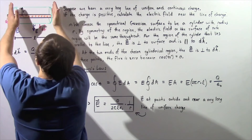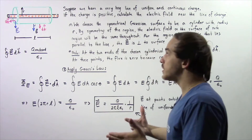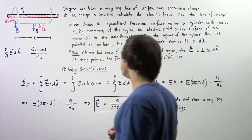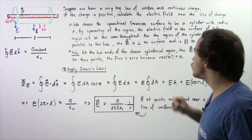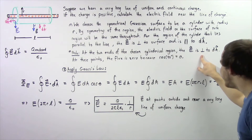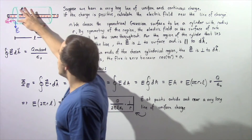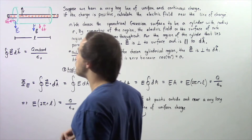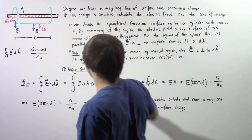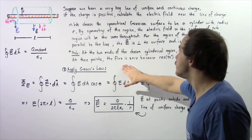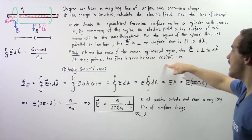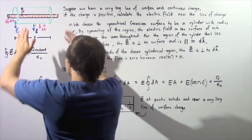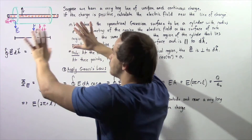Now let's examine what happens at the two ends of our cylinder. Since we're choosing a closed region of space, we have to consider these two sides as well. At the two ends of our chosen cylindrical region, the electric field is perpendicular to dA. So the angle is 90 degrees, and the electric flux is zero because cosine of 90 is zero. There is no electric flux through these two ends, so we don't have to consider them.